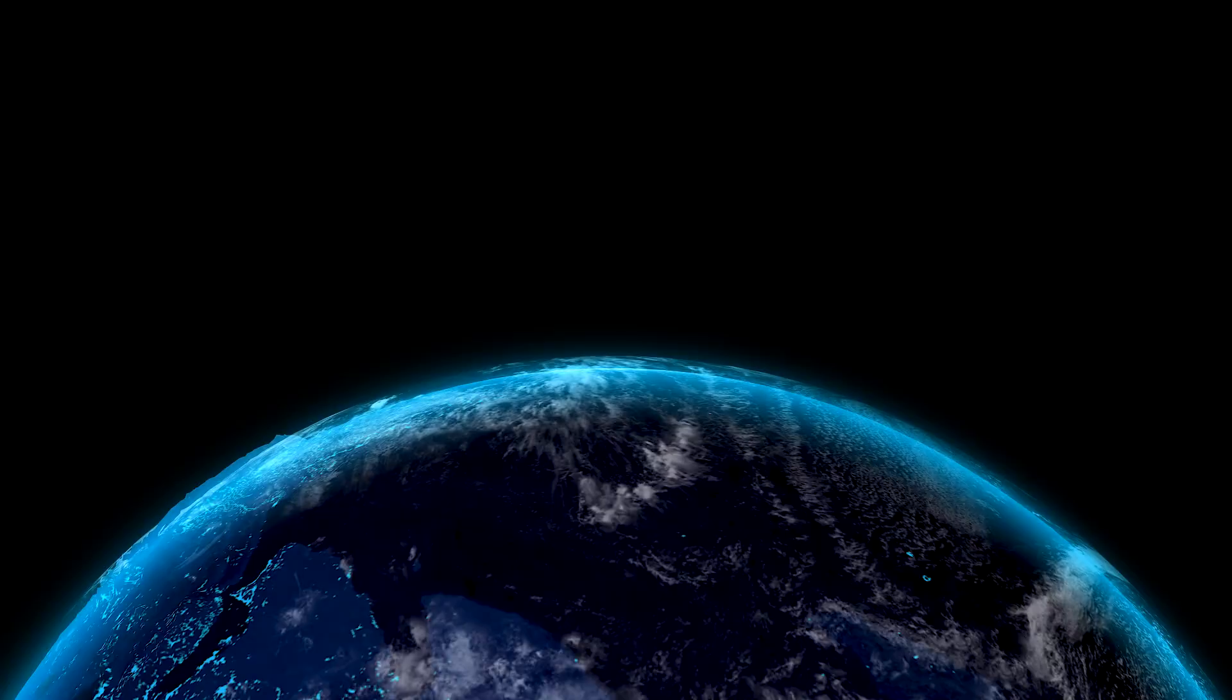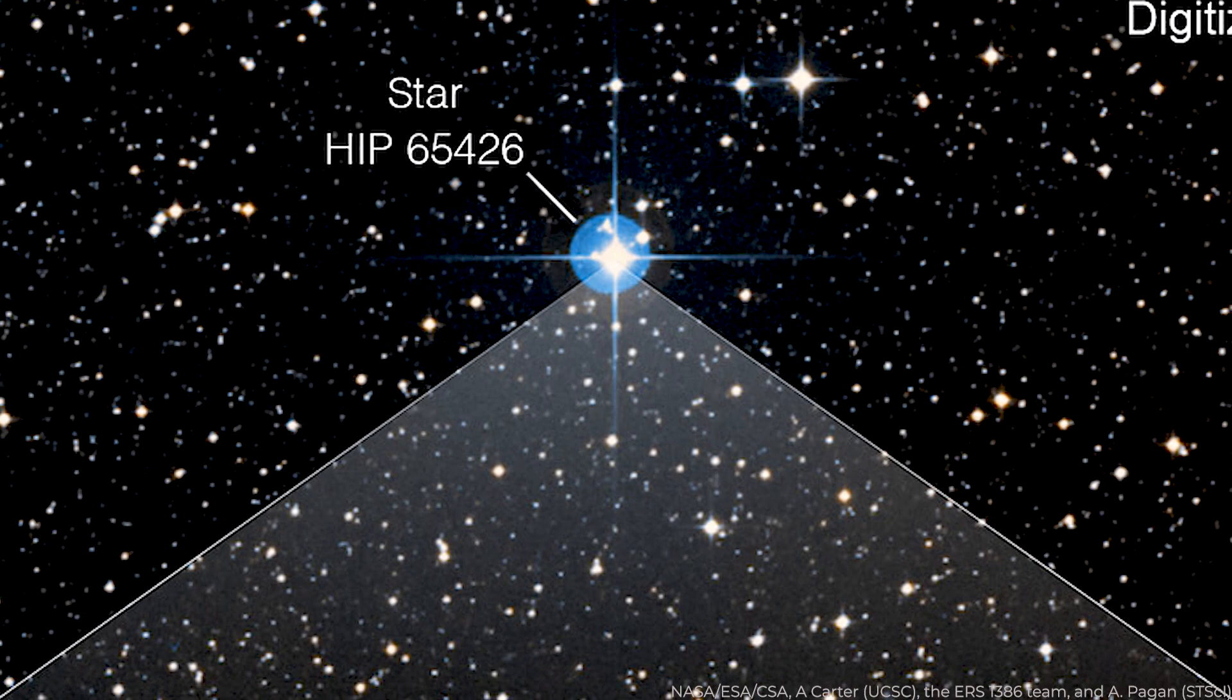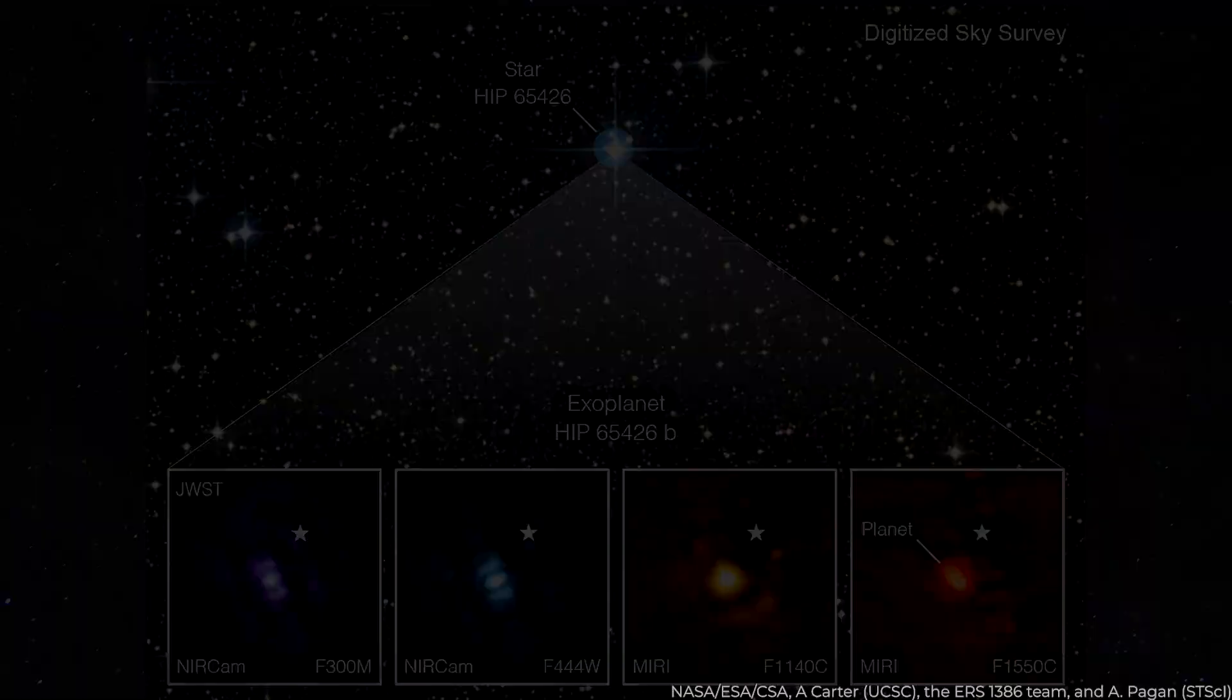The exoplanet is a gas giant, which means it lacks a stony surface and cannot support life. The picture, captured using four distinct light filters, demonstrates how Webb's strong infrared vision can readily catch worlds outside our solar system, paving the way for future surveys that will disclose more information about exoplanets than ever before.